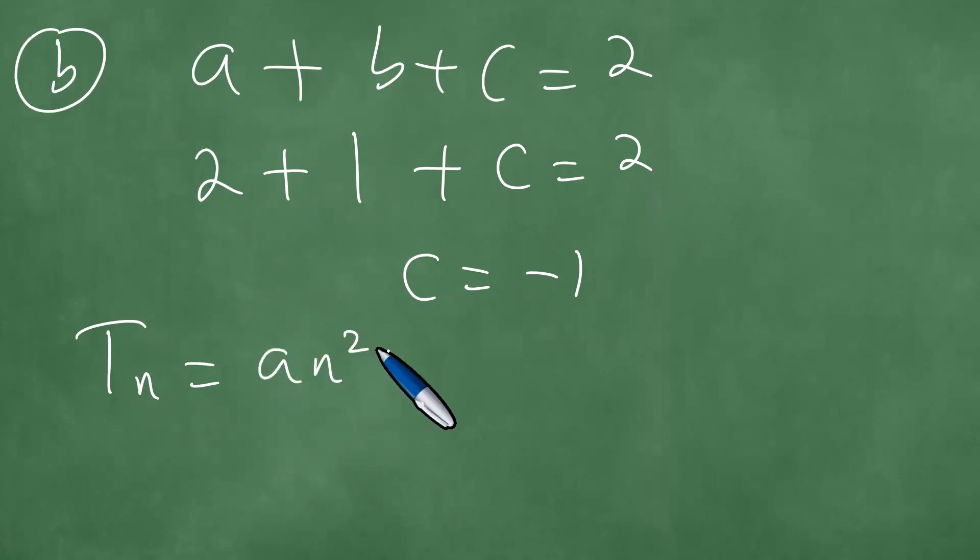T sub n is a n squared plus b n plus c, which means t sub n equals 2n squared. a is 2, b is 1, and c is minus 1. So this is the general term of the quadratic sequence, the quadratic pattern. The general term is 2n squared plus n minus 1.